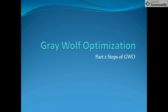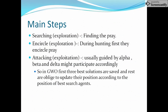This is Gray Wolf Optimization part two, in which we are going to discuss the different steps of the Gray Wolf Optimization algorithm. There are basically three main steps already discussed in our previous video: searching, circling, and attacking. If we categorize into main parts, there are two: exploration and exploitation. In exploration the wolf searches for the prey, then encircles it, and finally exploits and attacks.